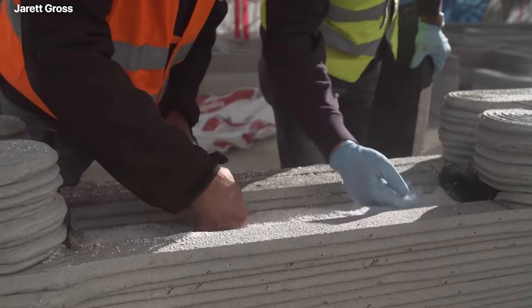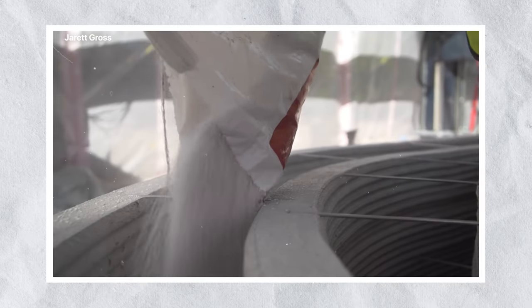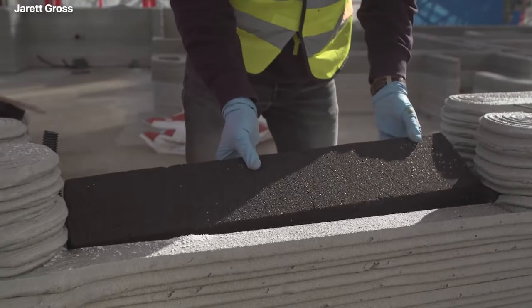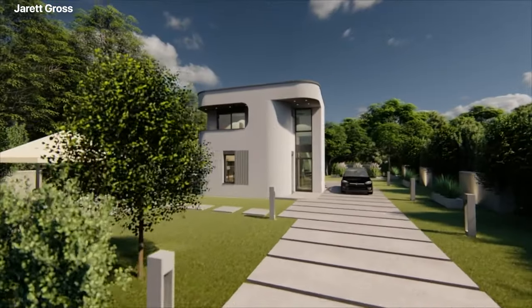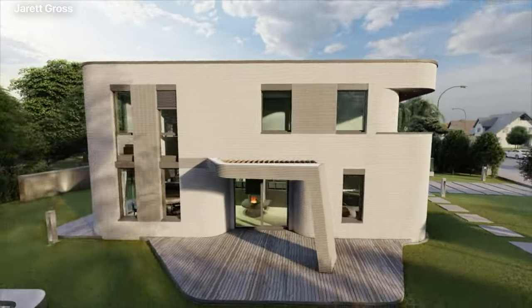Additionally, 3D printed houses are more environmentally friendly since they require fewer materials and generate less construction waste. Lastly, the accuracy of 3D printing ensures that the finished product is of high quality.